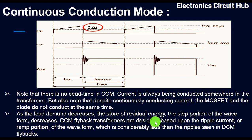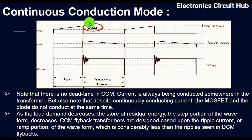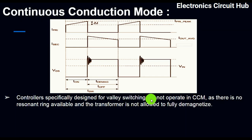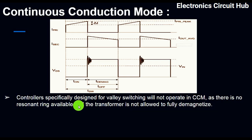The CCM flyback transformer is designed based on the ripple current, or the ramp portion of the waveform, which is considerably less than the ripple seen in the DCM flyback. You can see Delta IL marked in red. The design of the flyback CCM transformer is based on this ripple current or Delta I, this step waveform portion. Controllers specifically designed for valley switching will not operate in CCM, as there is no resonant ring available — the transformer is not allowed to fully demagnetize.